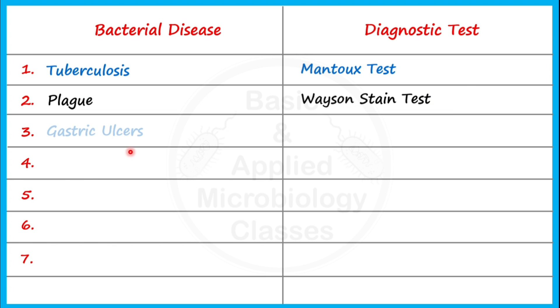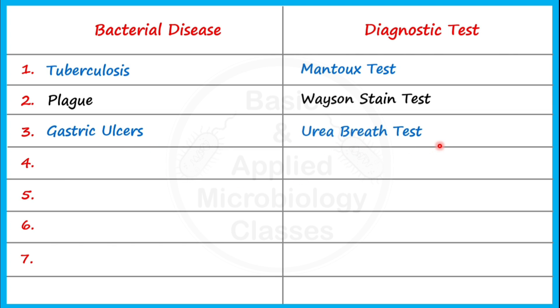Gastric ulcers, also called stomach ulcers, are caused by Helicobacter pylori, and for detection of gastric ulcers we use the urea breath test.